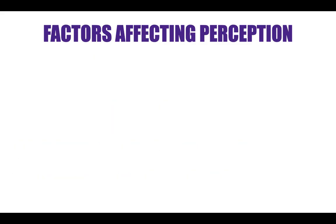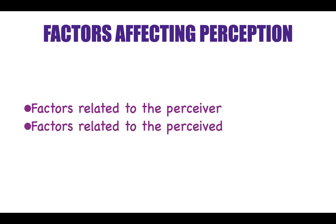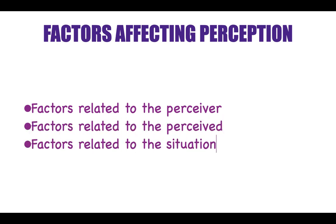What are the factors which affect perception? There are three factors that affect perception. It could be related to the perceiver, it could be related to the perceived, and it could be related to the situation.